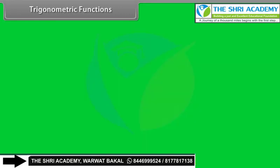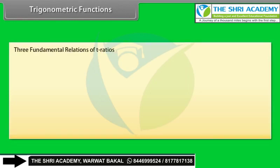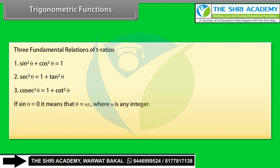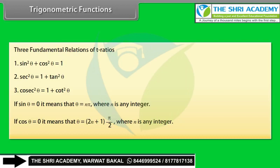Three fundamental relations of T-ratios: sin²θ + cos²θ = 1; sec²θ = 1 + tan²θ; cosec²θ = 1 + cot²θ. If sin θ = 0, then θ = nπ where n is any integer. If cos θ = 0, then θ = (2n+1)π/2 where n is any integer.